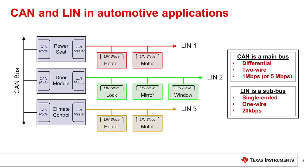CAN is the main bus used in today's automobiles. It allows different modules, like power seats, door modules, and climate control units, to talk to each other. CAN with flexible data rate, or CAN-FD, is the most popular method of communication over this bus. CAN and CAN-FD implement a differential two-wire interface. Classical CAN operates up to one megabit per second, while CAN-FD operates up to five megabits per second. LIN is a sub-bus that operates at lower data rates.